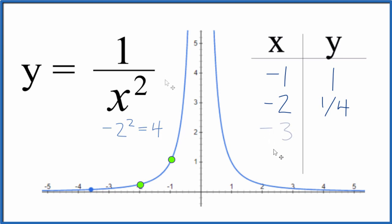Let's put negative 3 in. So we put negative 3 in for x, negative 3 squared, that equals 9. y equals 1 over 9. So one ninth.